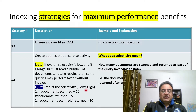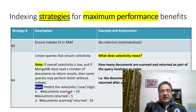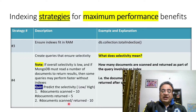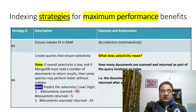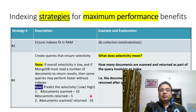I have set a quiz for you: predict whether selectivity is low or high in these two cases. Case one: number of documents scanned equals 10, number of documents returned equals 5. Case two: number of documents scanned equals 10, number of documents returned equals 10. Tell me which selectivity is low and which is high. Please post your answers in the comment section.